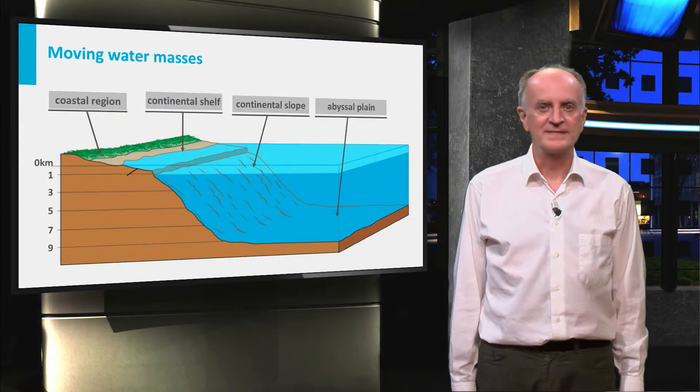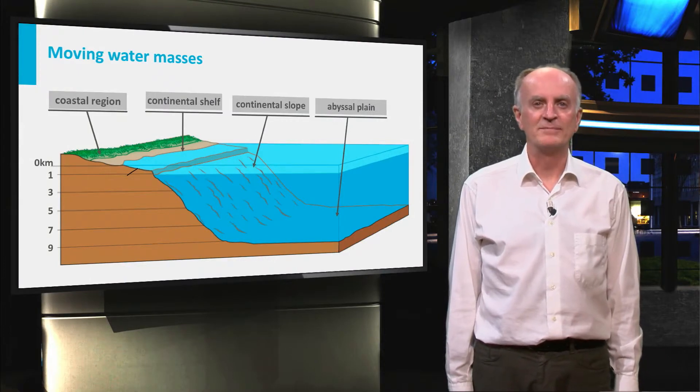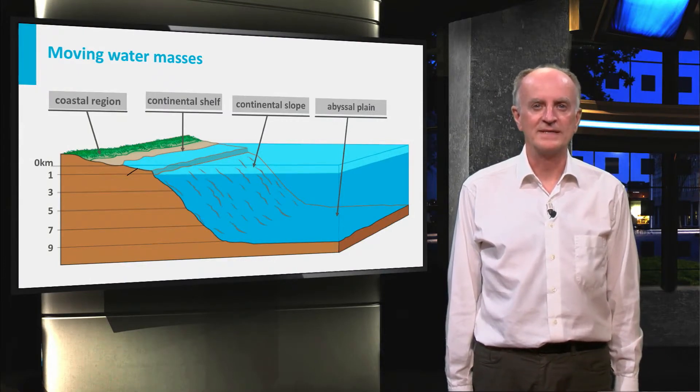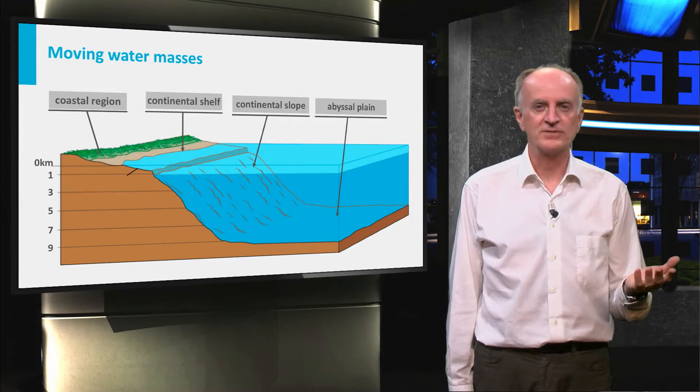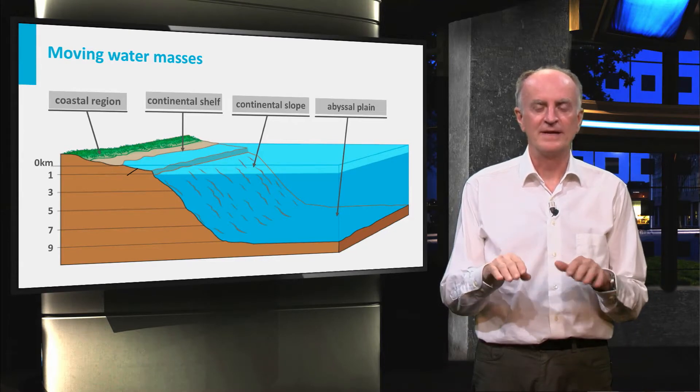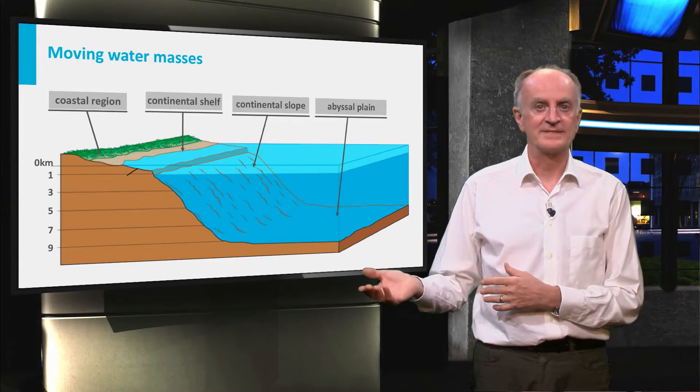Welcome! We have seen in the previous clip the main morphological domains of the sea and ocean: the coastal region, the continental shelf and slope, and eventually the abyssal plane.